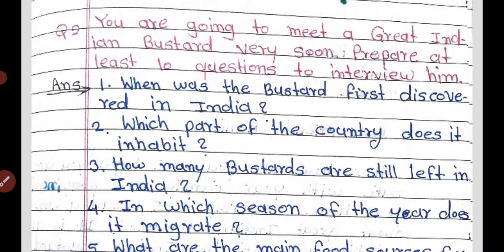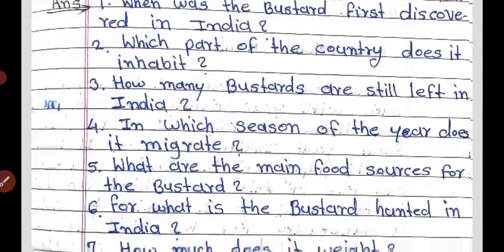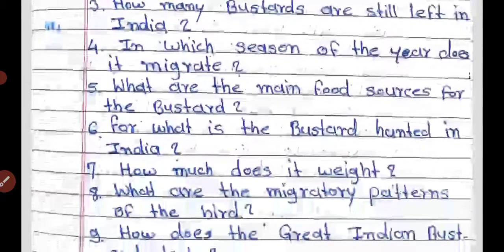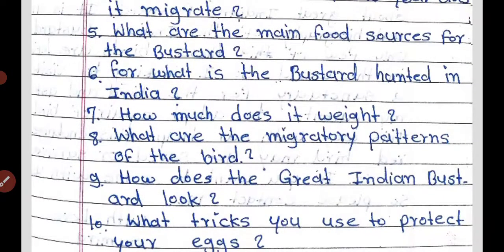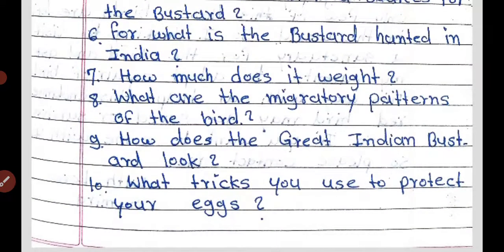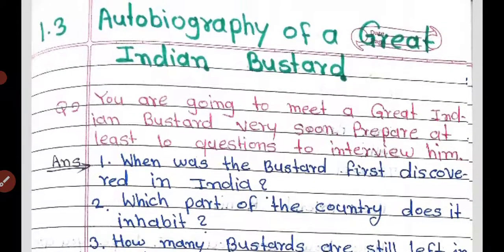These are the 10 questions I have prepared for the interview. I am reading them again — please copy them into your notebook. The questions cover: when was the Bustard first discovered in India, which part of the country it inhabits, how many are left, in which season it migrates, its food sources, why it is hunted, its weight, migratory patterns, how it looks, and what tricks it uses to protect its eggs.